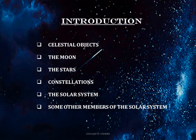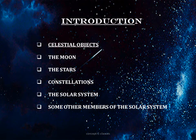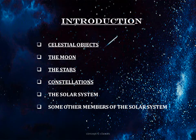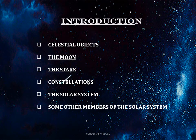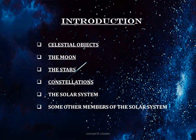These are the topics we are going to study in this chapter. In Part 1, we will first study about celestial objects, the moon, the stars and the constellations. In Part 2, we will deal with the solar system and some other members like meteors, asteroids, comets, etc.